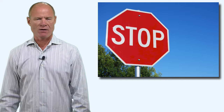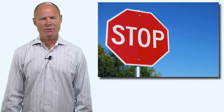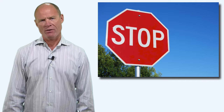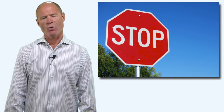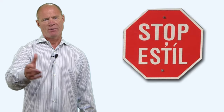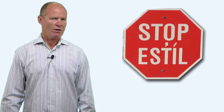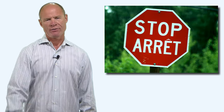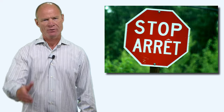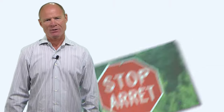Stop signs are octagon — eight sided — very prominent. They have a white border, a red background, and the word STOP written in white on them. If you're on a native reserve they might be in the language of that reserve, or if you're in Quebec they'll be in French — "arrêt" — which means to stop, as you can see in the image.